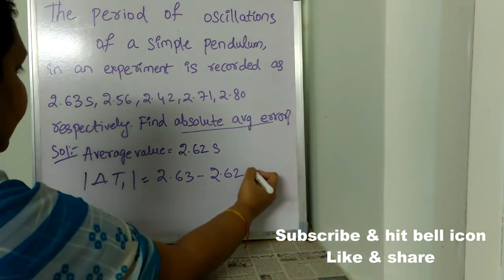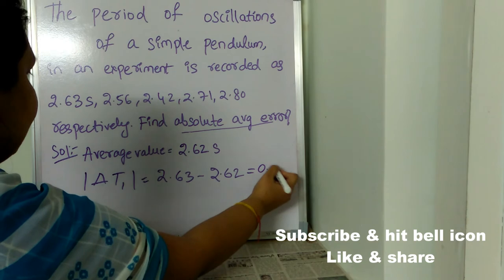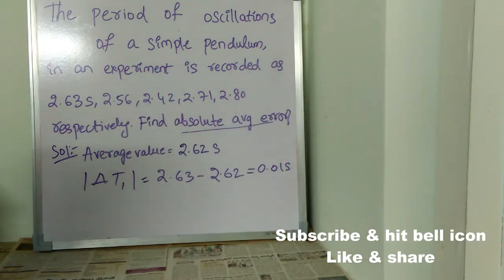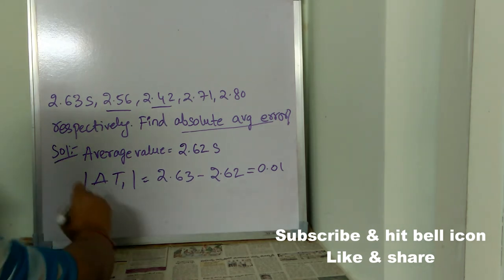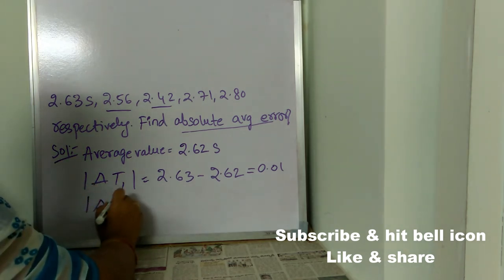So, now when we find the difference, we will be getting 0.01 seconds. Now, we have found the value of delta T1, right? Now, what we need to do is we need to find the value of delta T2.